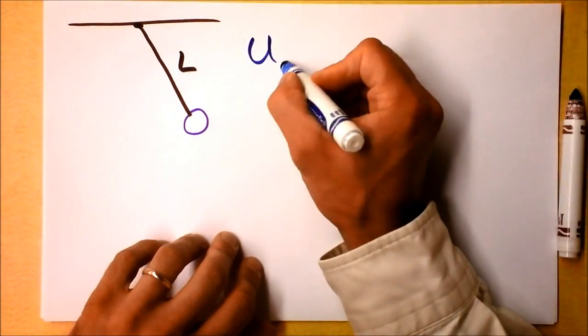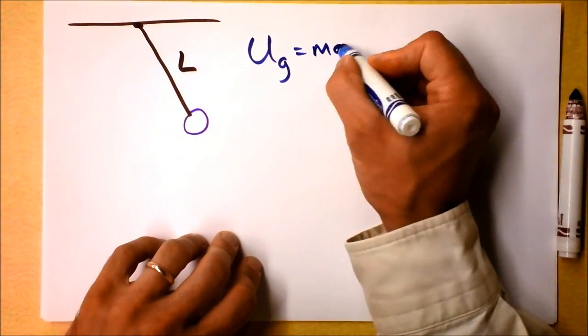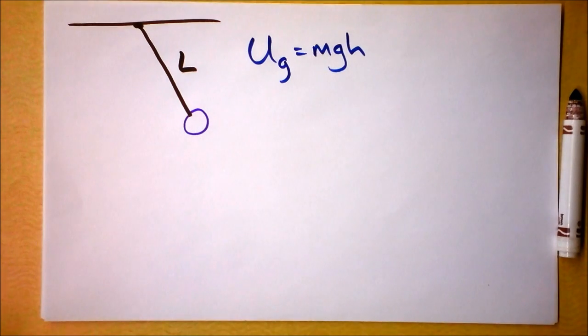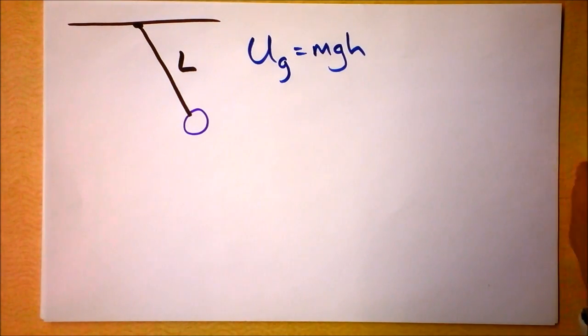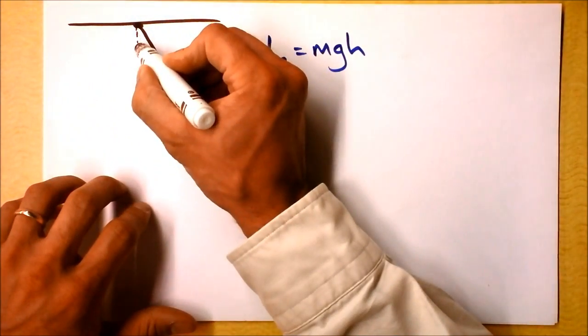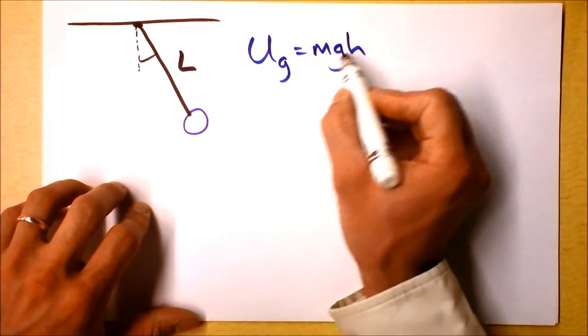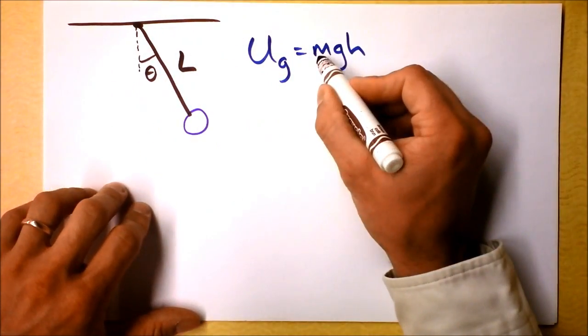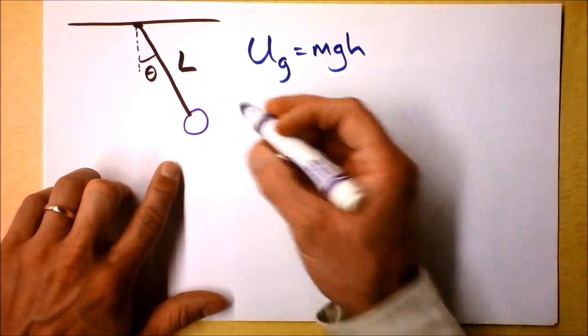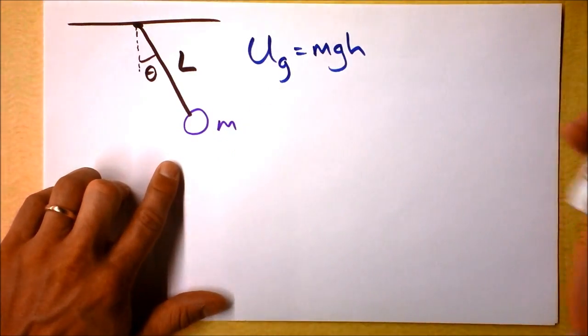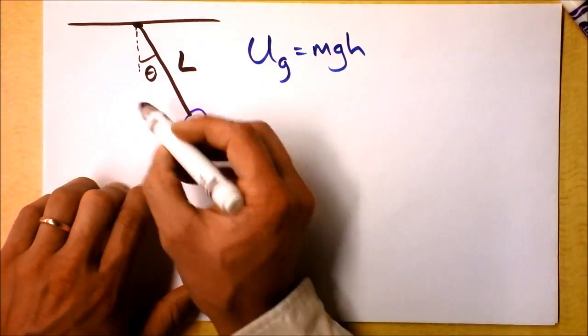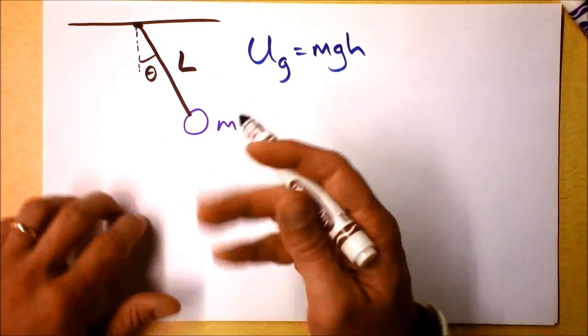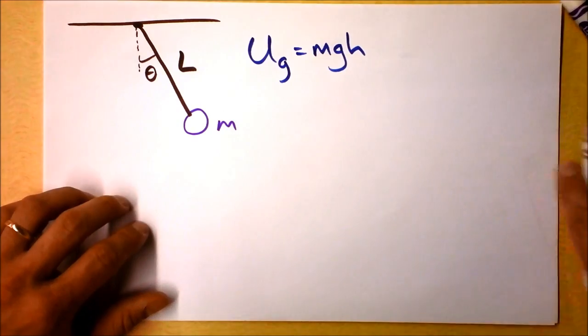Let's get some blue out here. The potential energy of the pendulum is m times g times h. So we need to kind of think about, maybe throw an angle in here. The height is certainly going to depend on the angle, let's call it theta. The mass of the pendulum is going to be known, we'll just say that it's a pendulum of mass m. And maybe g will be a constant for our purposes. So we need to figure out how high up the pendulum is above whatever we decide to call the zero point.